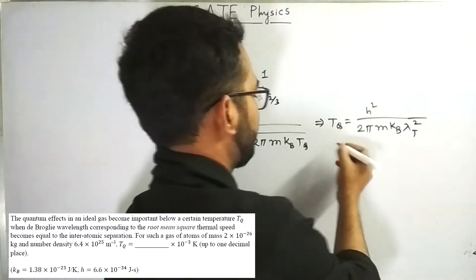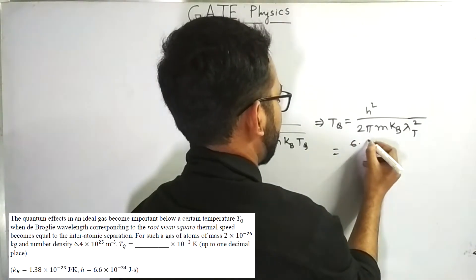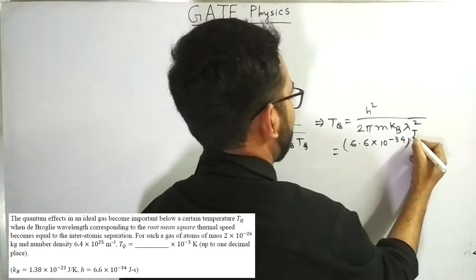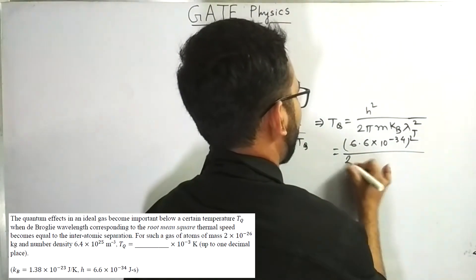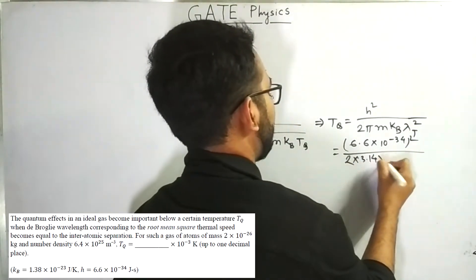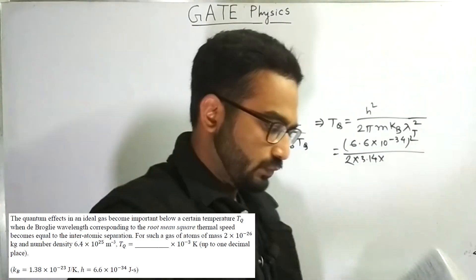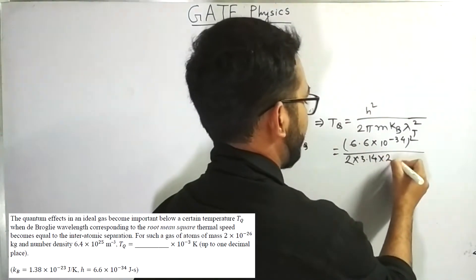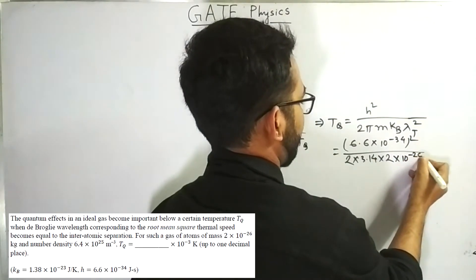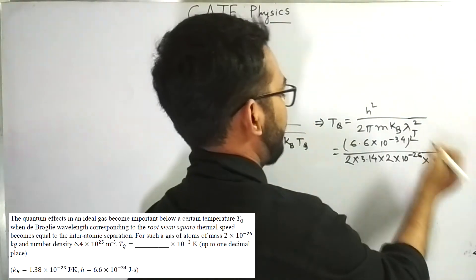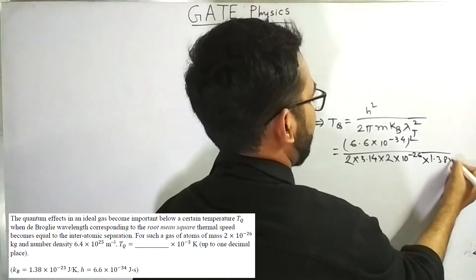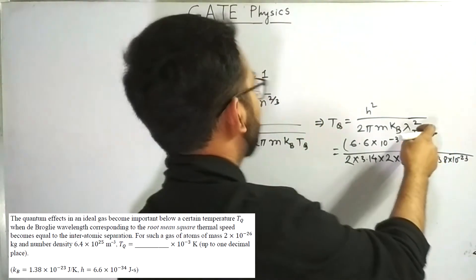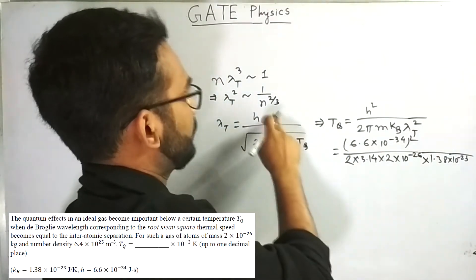Now, everything is given. So, we know it is equal to 6.6 into 10 to the power minus 34 squared divided by 2 into pi minus 3.14. Mass is given to be 2 into 10 to the power minus 26 kg. Then kb is 1.38 into 10 to the power minus 23 Joule per Kelvin. And lambda t squared equal to 1 by n to the power 2 by 3.